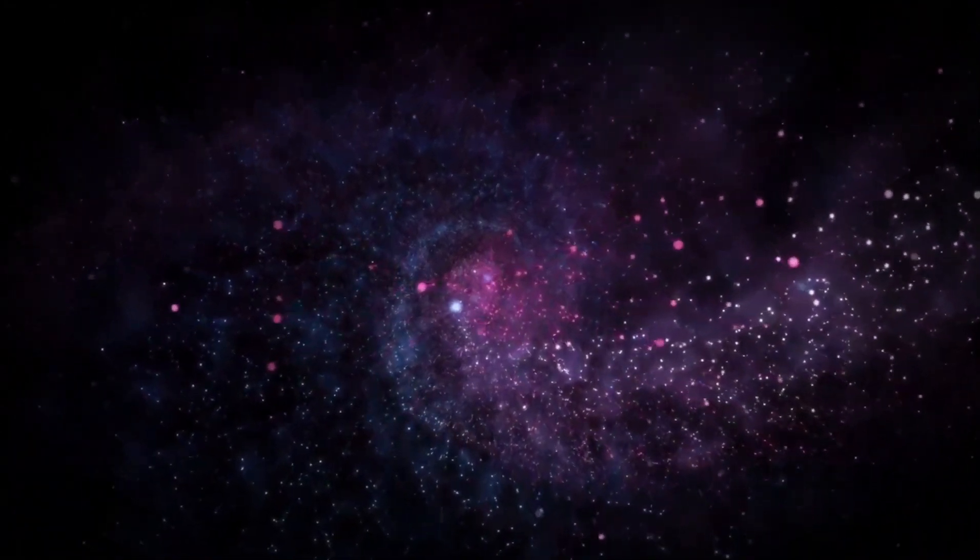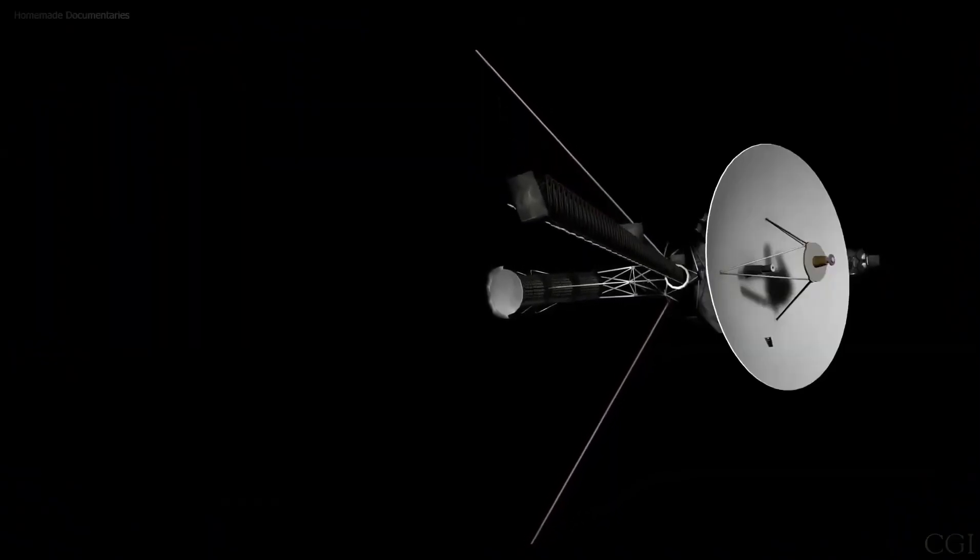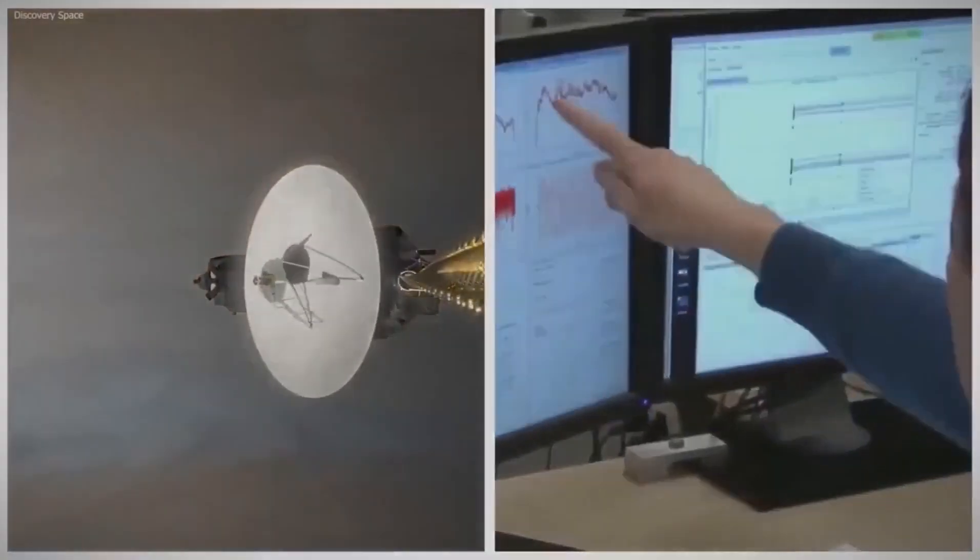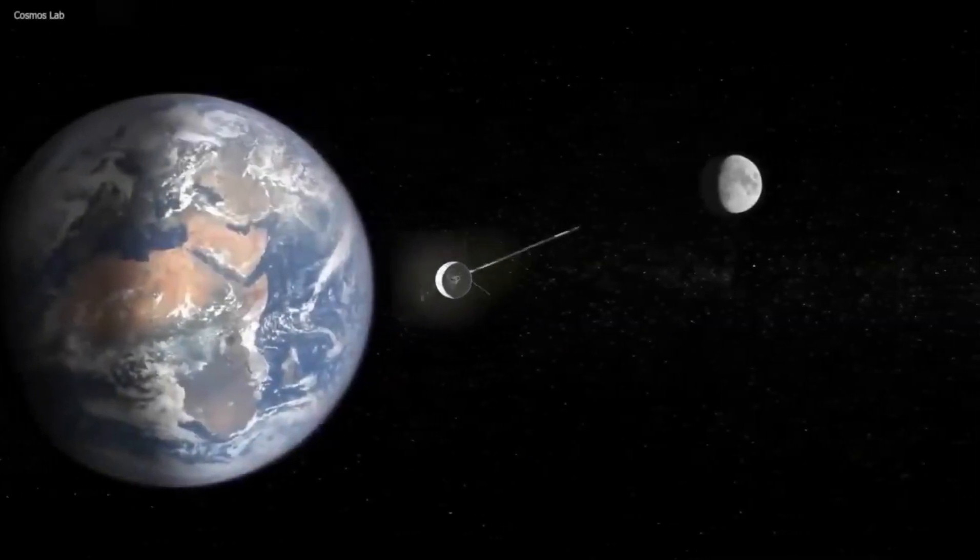In August 2012, Voyager 1 achieved an extraordinary milestone by officially reaching the outermost boundary of our solar system, known as the heliopause. However, this accomplishment was far from easy.